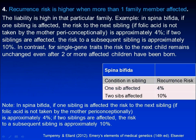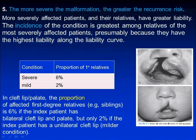Fourth, recurrence risk is higher when more than one family member is affected, as shown in the case of spina bifida. Fifth, the more severe the malformation, the greater the recurrence risk. The incidence of the condition is greatest among relatives of the most severely affected patients, presumably because they have the highest liability along the liability curve.